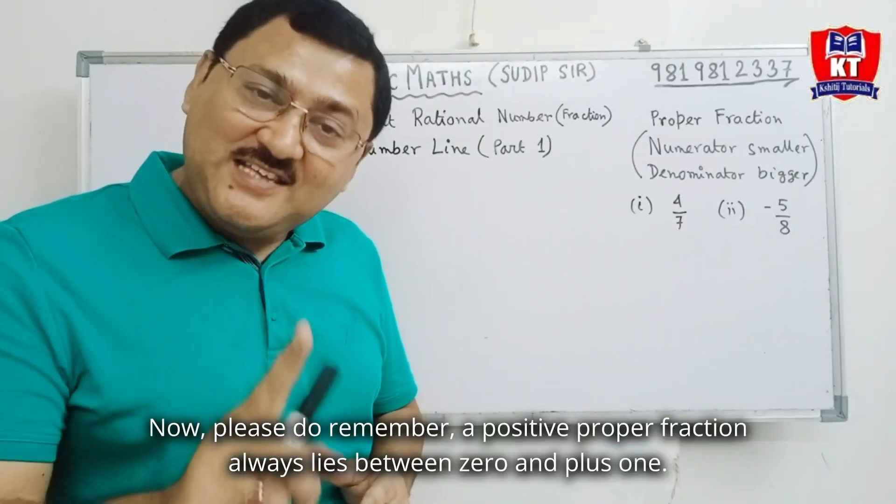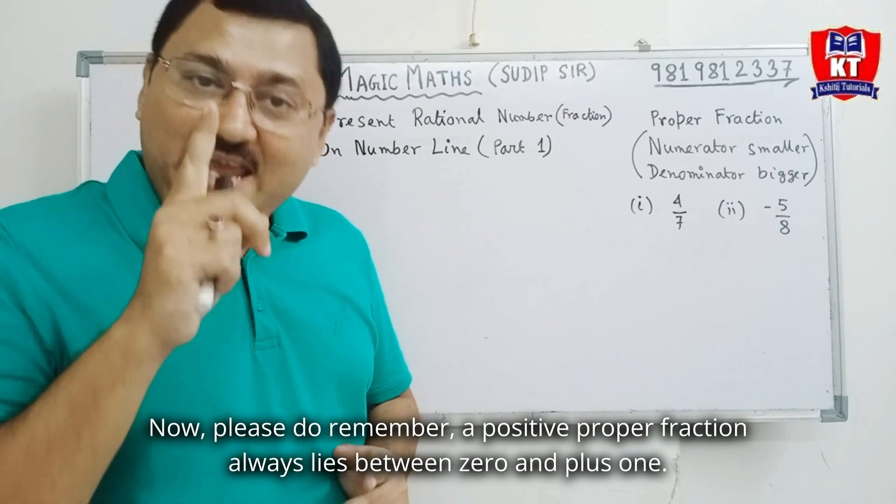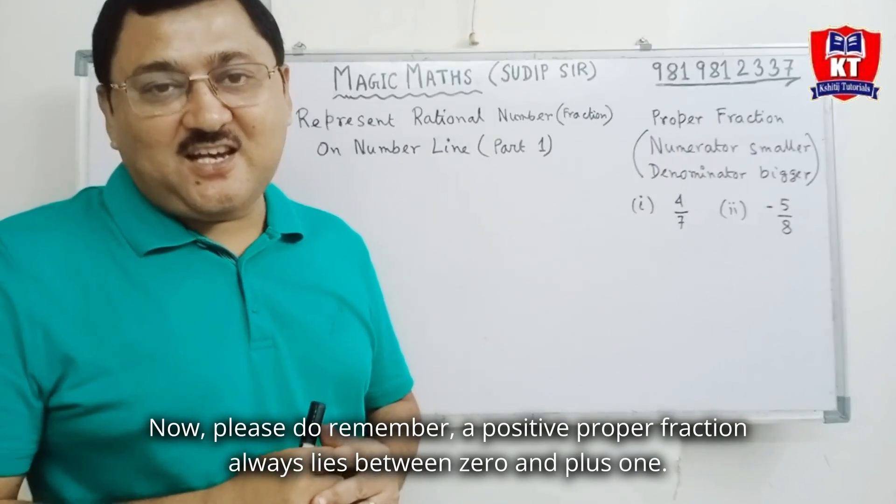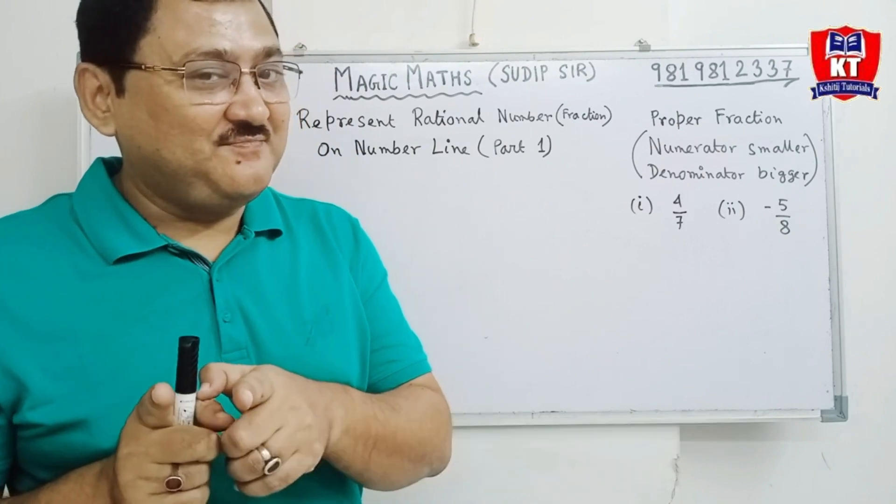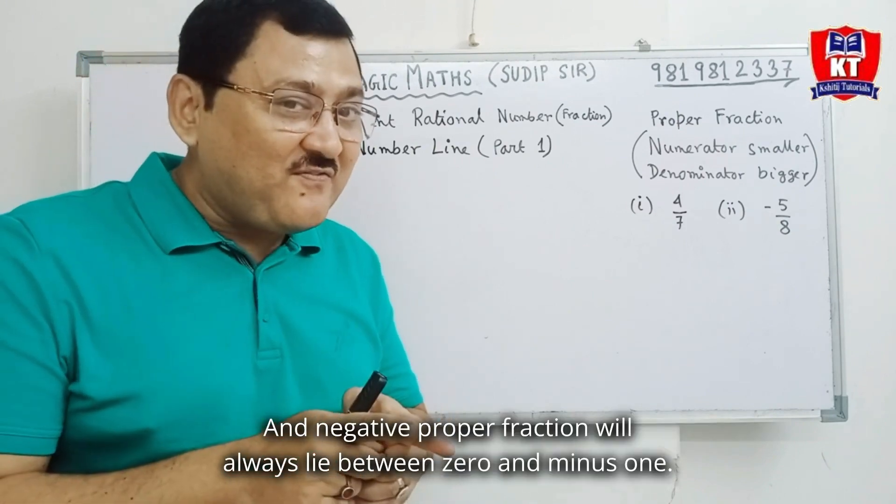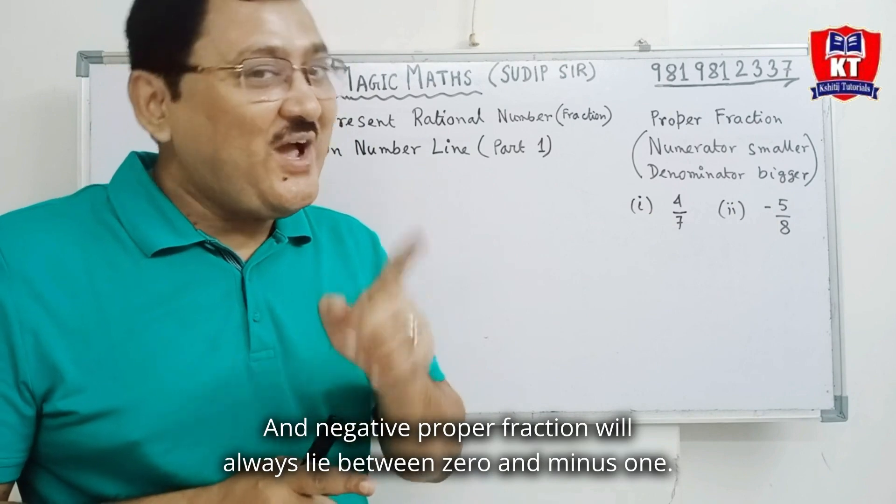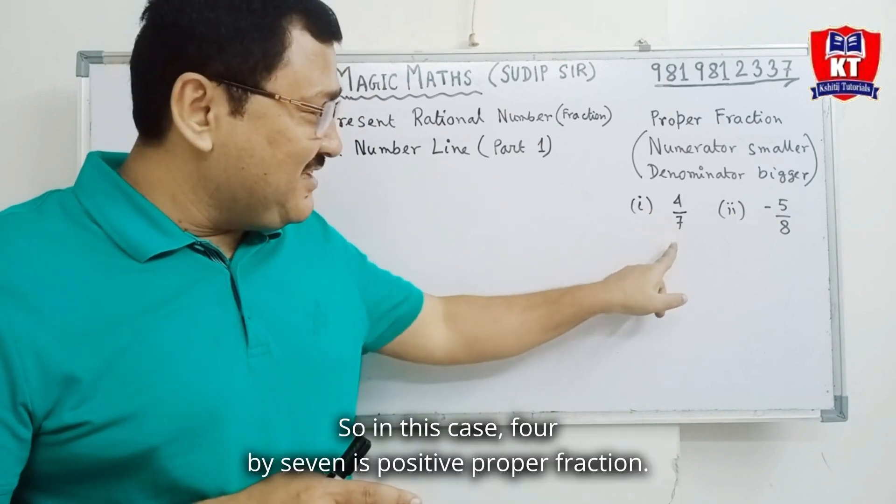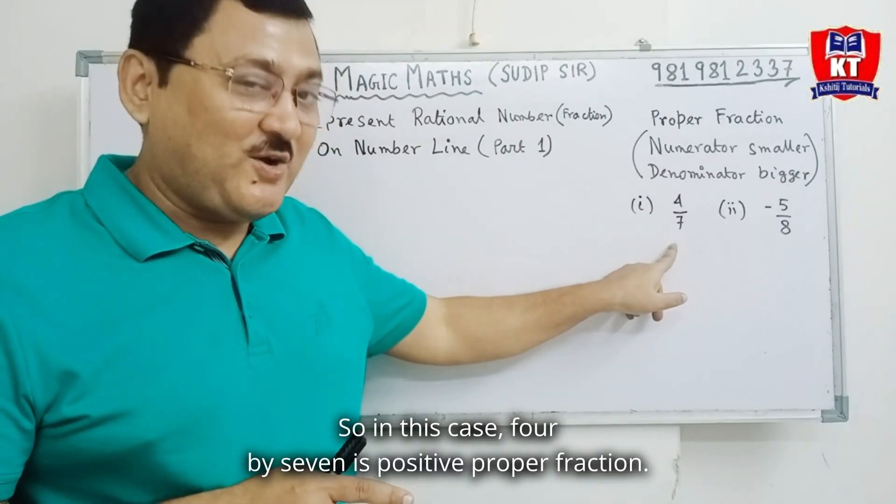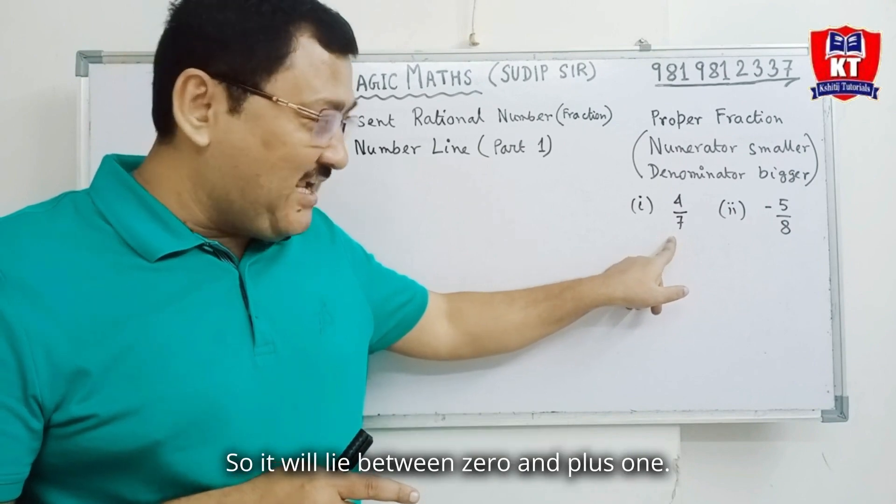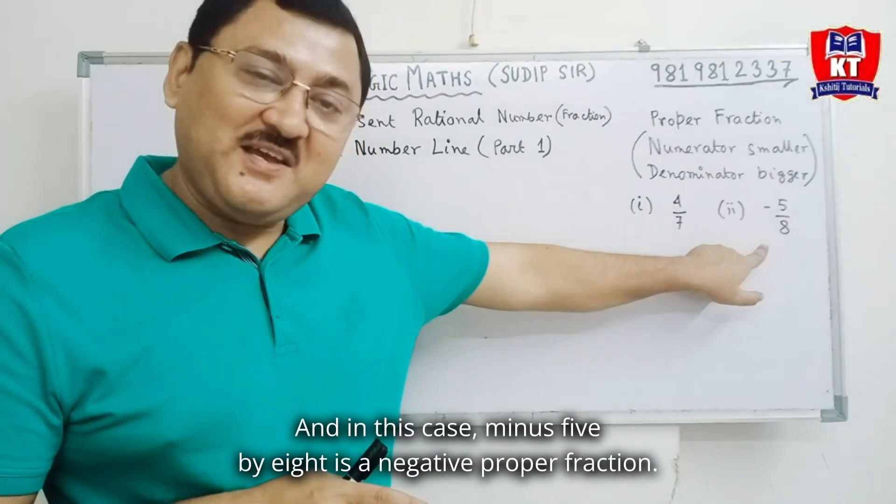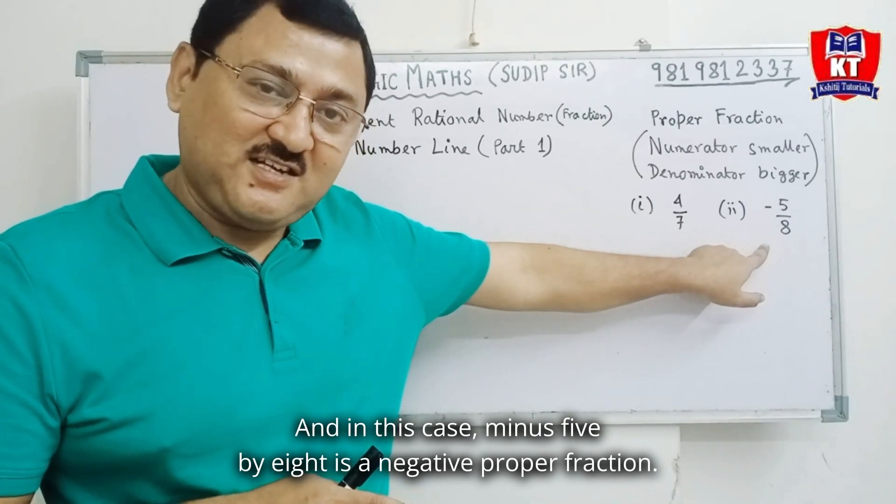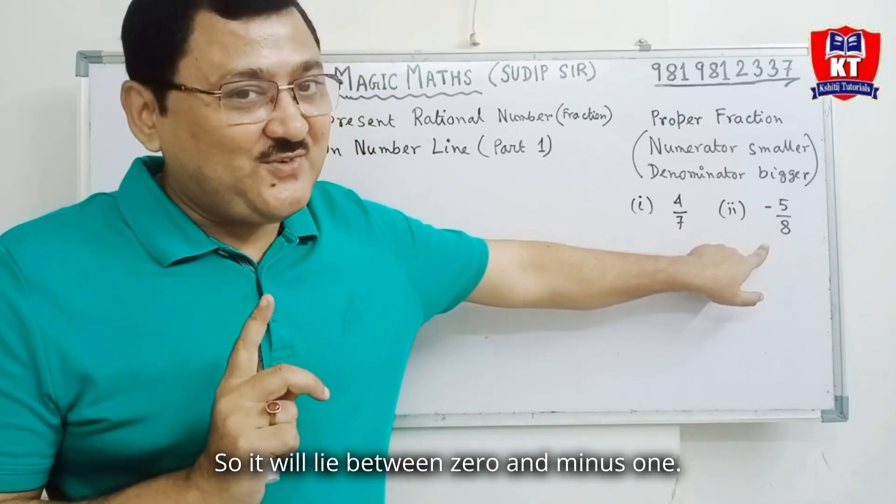Now, please do remember, a positive proper fraction always lie between 0 and plus 1, and negative proper fraction will always lie between 0 and minus 1. So, in this case 4 by 7 is positive proper fraction, so it will lie between 0 and plus 1. And in this case, minus 5 by 8 is a negative proper fraction, so it will lie between 0 and minus 1.